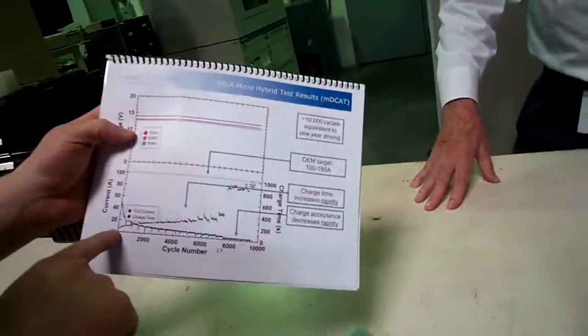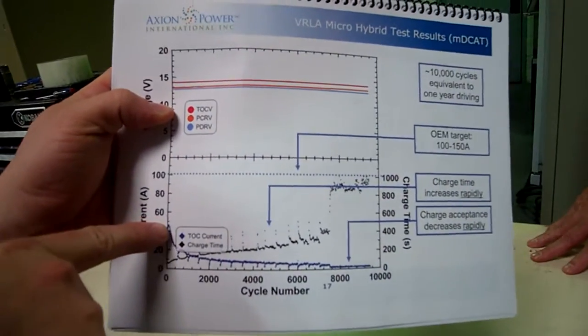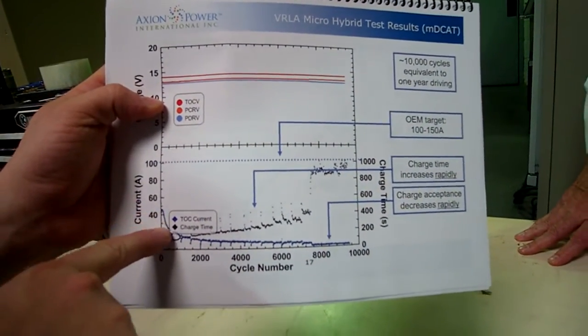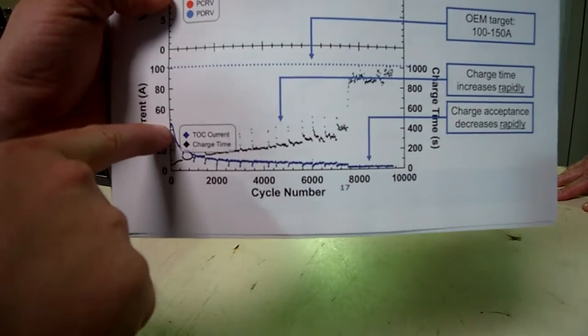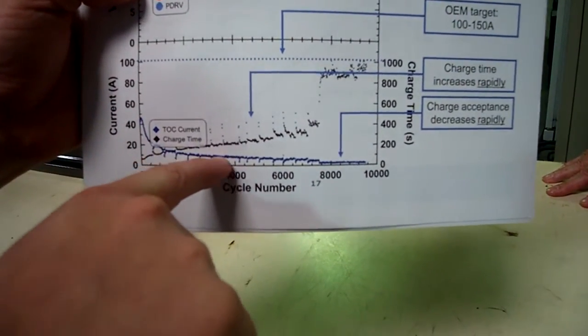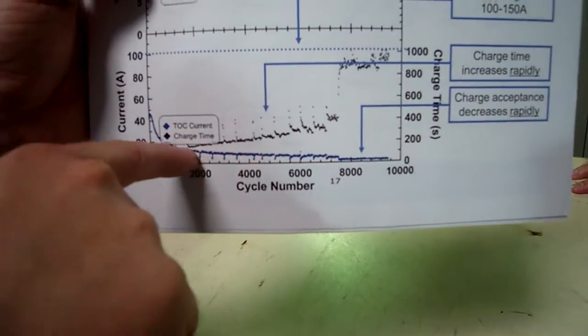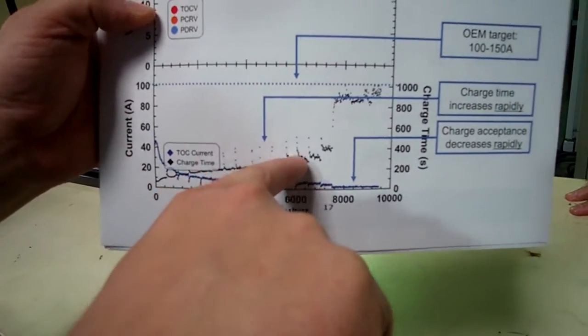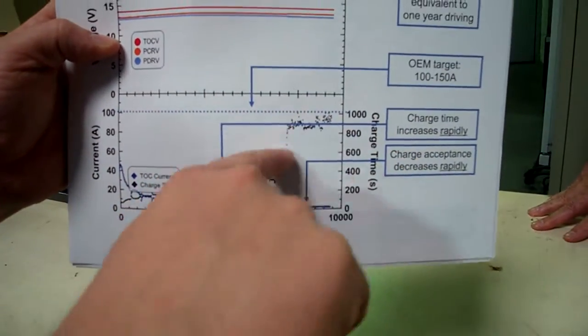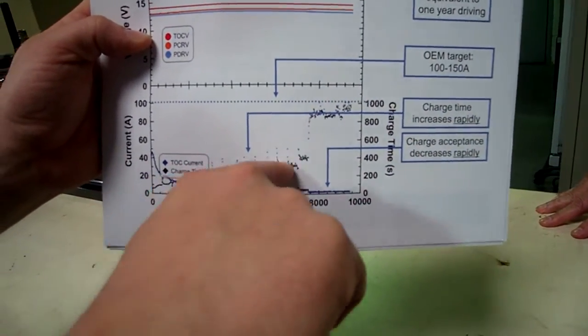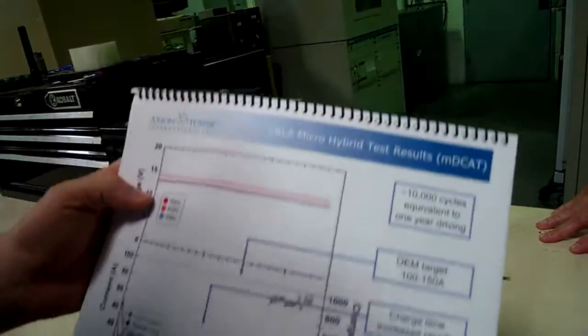You go from a charge acceptance—this blue line—that's very high and moves very fast and rapidly down to a low value. So your charge acceptance is very low. The black line is your time, which is increasing and gets very bad towards the end. So you see this increase in time and this decrease in charge acceptance.